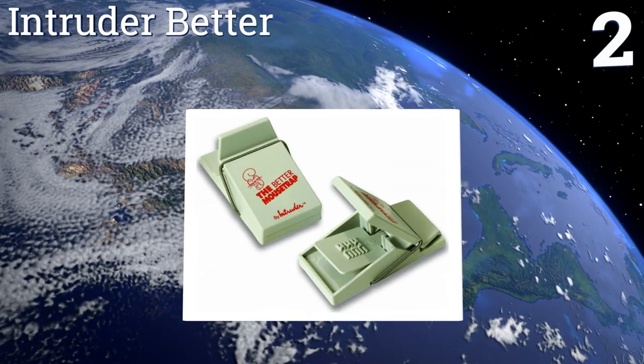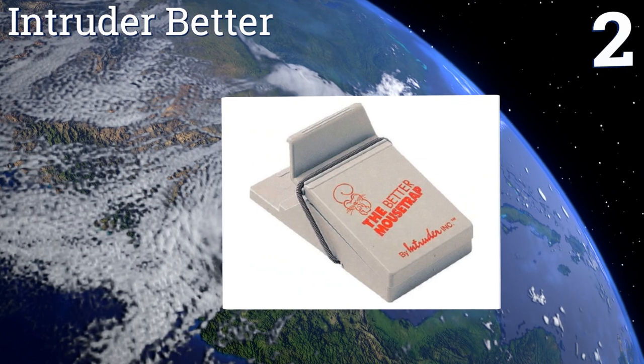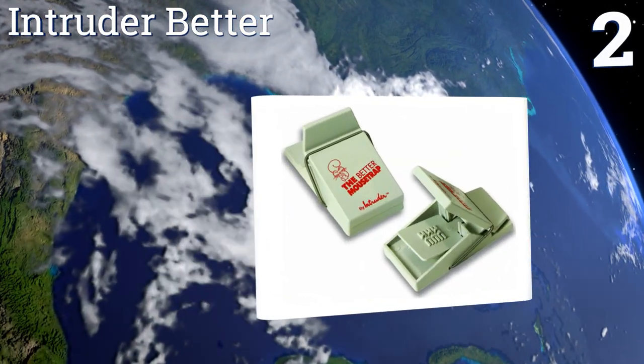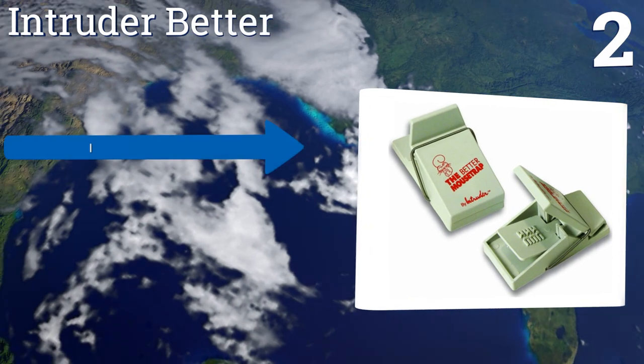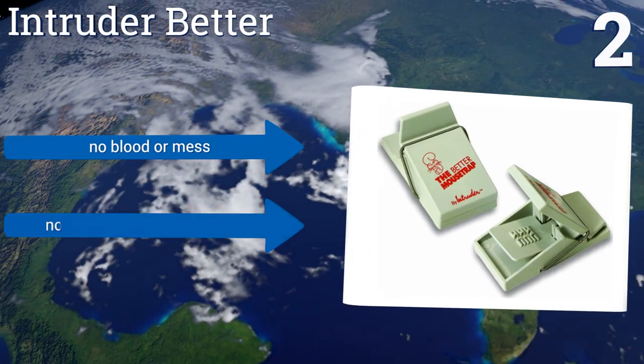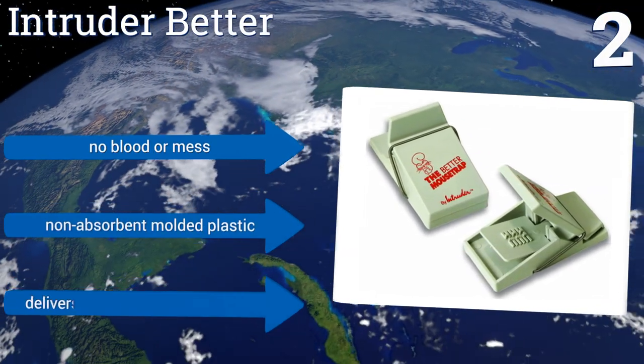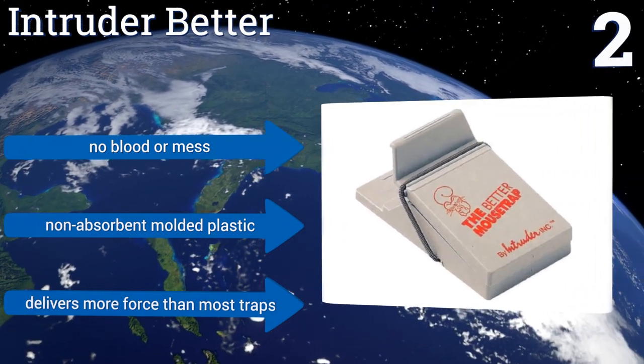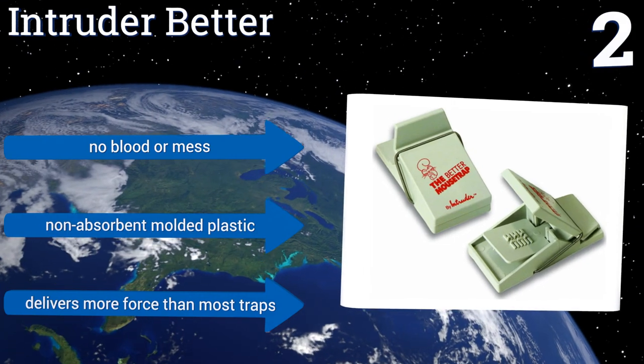At number two: built to offer a super compact design and easy operation, the Intruder Better is simple to use. Just squeeze the trap back to set it, then squeeze again to release your catch when the mouse has met its demise. It's also effective on gophers and chipmunks. It produces no blood or mess and is made from non-absorbent molded plastic. It delivers more force than most traps.